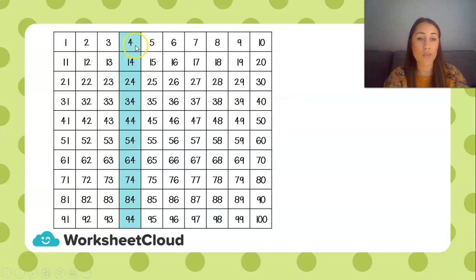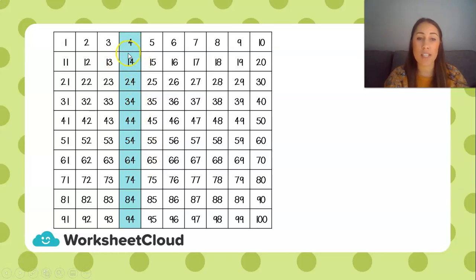Well done! If you've seen the pattern, you've seen that if we count in tens, we are just going to hop one number down on my 100 chart. Because when I add 10, only my tens of my number is going to change. My unit, which is the 4, has stayed the same all the way to the bottom. So, if I look at the number 14 and I add 10, I'm going to get 24. Only my tens change. If I add another 10, only my tens are going to change and it's going to become 34. And if I add another 10, only the tens are going to change to 40, and it will become 44.